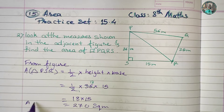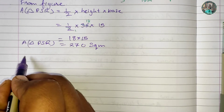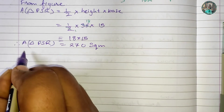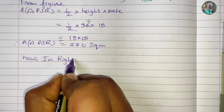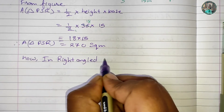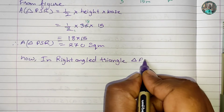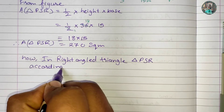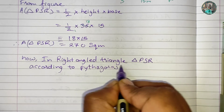The area of triangle PSR is found. Now, in right angle triangle PSR, according to the Pythagoras theorem, we need to find PR.